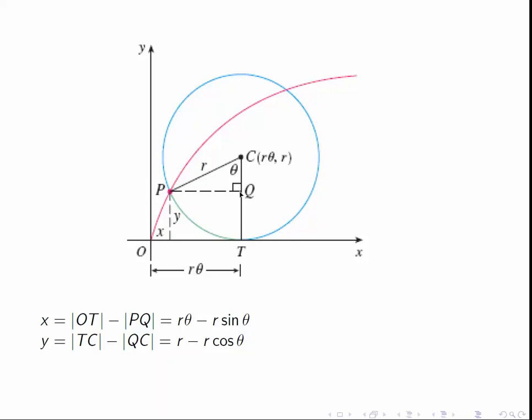So what's PQ? Up here we have a little right-angle triangle. The central angle, by definition, here is theta. This is the right angle. The hypotenuse is R. So PQ is just the opposite side of this right-angle triangle. The length of this is R sine theta. So the X coordinate here is OT minus PQ. It's R theta minus R sine theta.